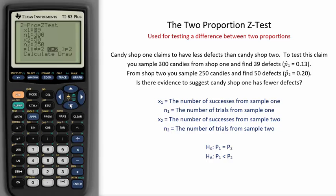We have here 39, which is the number of successes from Sample 1, and 300, which is the sample size from Sample 1. This is also a sample proportion of 13% from the first store.